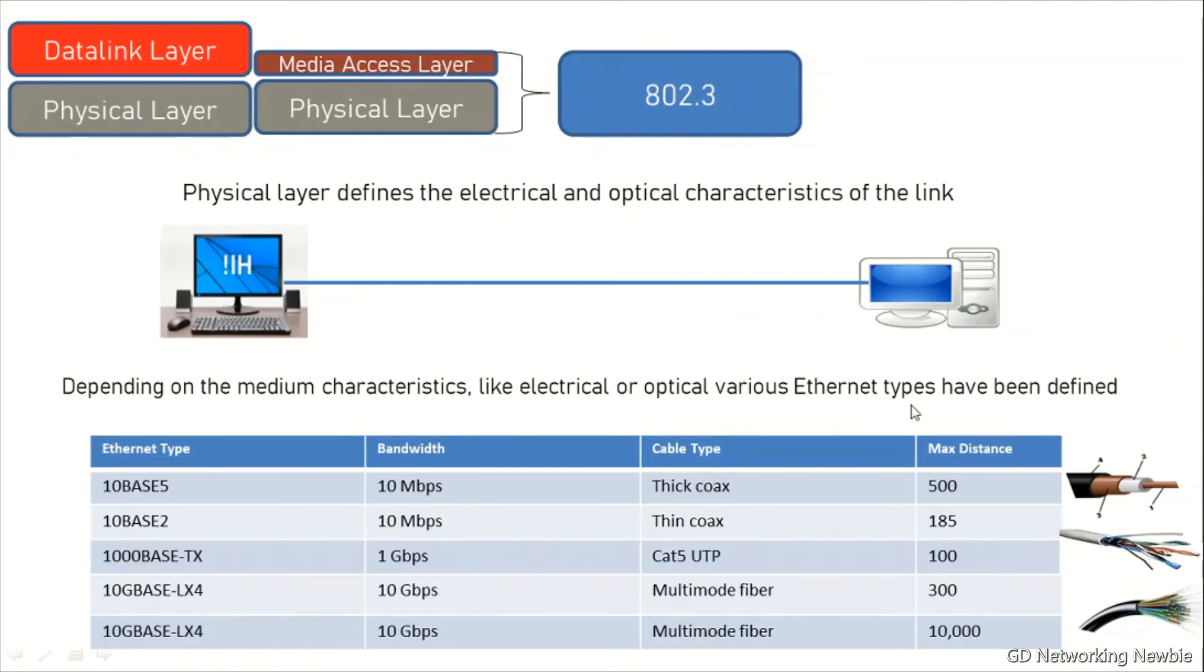Depending on the characteristics of the media, various Ethernet types have been defined. For example, in this table, 10BASE5 uses coaxial cable for transmission and provides a bandwidth of 10 megabits per second with maximum distance between nodes of 500 meters. For 1000BASE-TX, this type of Ethernet uses UTP Cat5 and offers bandwidth of 1 gigabits per second with maximum distance covered by this UTP of 100 meters.